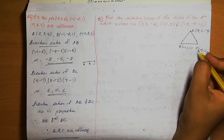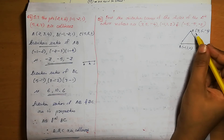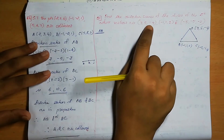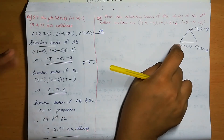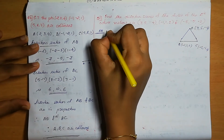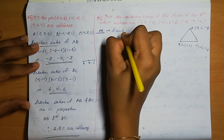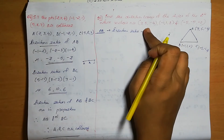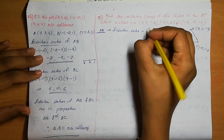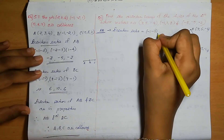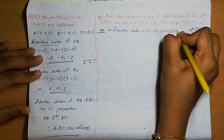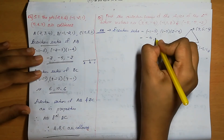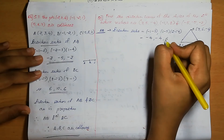For side AB, the direction ratios are x2 minus x1, y2 minus y1, z2 minus z1. That means minus 1 minus 3, 1 minus 5, 2 minus minus 4, which equals minus 4, minus 4, 6. This is the direction ratio of AB.